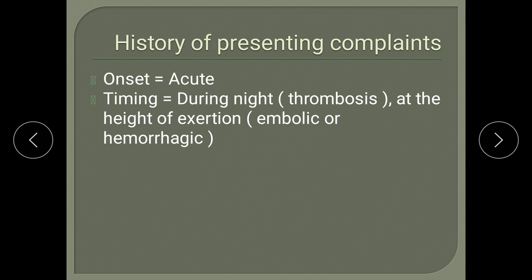For a case to be diagnosed as CVA, the onset should be acute, because vascular events — be it hemorrhage, thrombotic, or embolic — will be acute in onset. Regarding timing, if the CVA occurs during night or during sleep, it will be mostly thrombotic, because during sleep BP falls and blood flow becomes sluggish, which favors thrombosis. If the CVA occurs at the height of exertion, suspect embolic or hemorrhagic stroke.